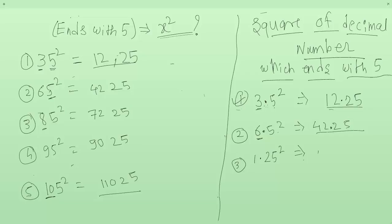Now look at the last example: 1.25 square. Square of 5 is 25. The remaining digits are 1 and 2, so keep them as a single number, that is 12. Now multiply 12 with its next digit, that is 13.